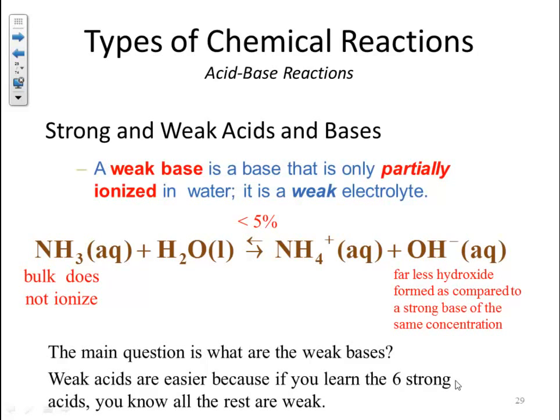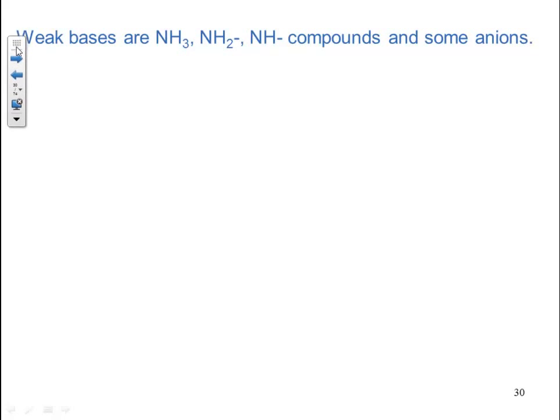It's fairly easy to identify strong acids versus weak acids because all acids start with hydrogen — you learn your six strong ones and everything else is weak. But weak bases are a little more difficult. You know your strong bases, so what are the weak bases? Your weak bases are your ammonia compounds, ammonia derivatives (NH compounds), and some other anions as well as some cations that are acidic.